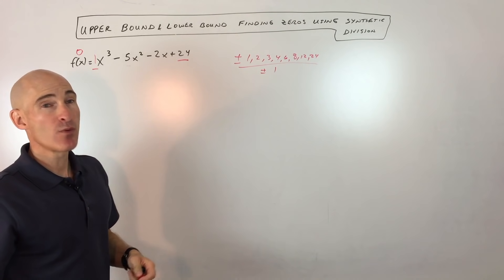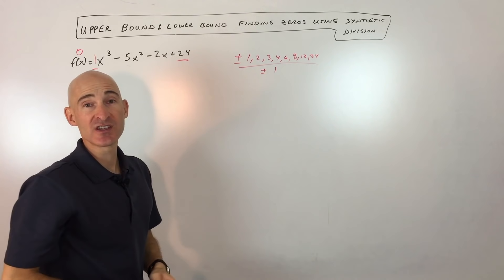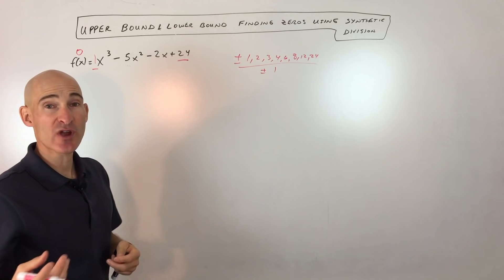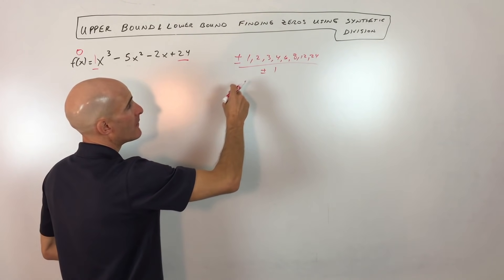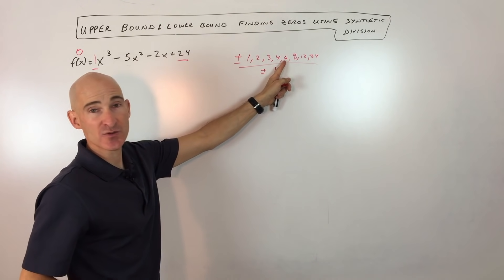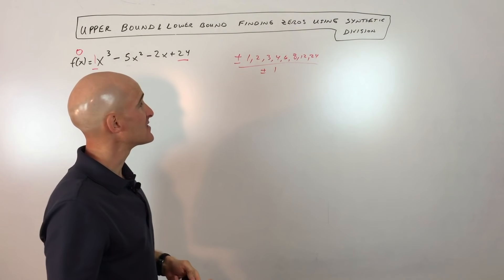Now, up to this point, you might have just been doing the synthetic division and just checking all of these. But what we're going to do here is we're going to just try to be strategic. We're going to pick a number somewhere in between positive one and positive 24. So let's maybe shoot for the middle. That's what I typically do. I'm going to try six to see if that's a zero.